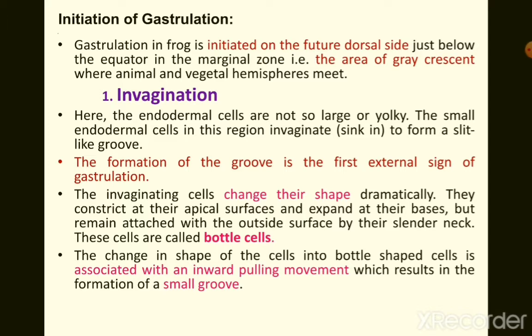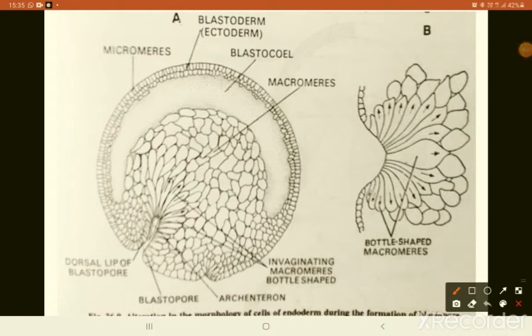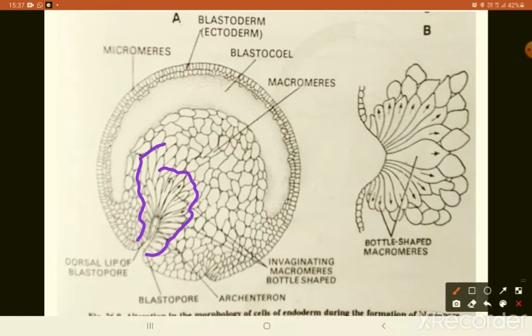The change in shape of cells into bottle-shaped cells is associated with an inward pulling movement resulting in the formation of a small groove. In the gray crescent region, endodermal cells begin moving inside, and you can observe that these blastomeres have changed from a round shape into bottle-shaped cells, exerting pressure on neighboring cells and driving them inward as well.